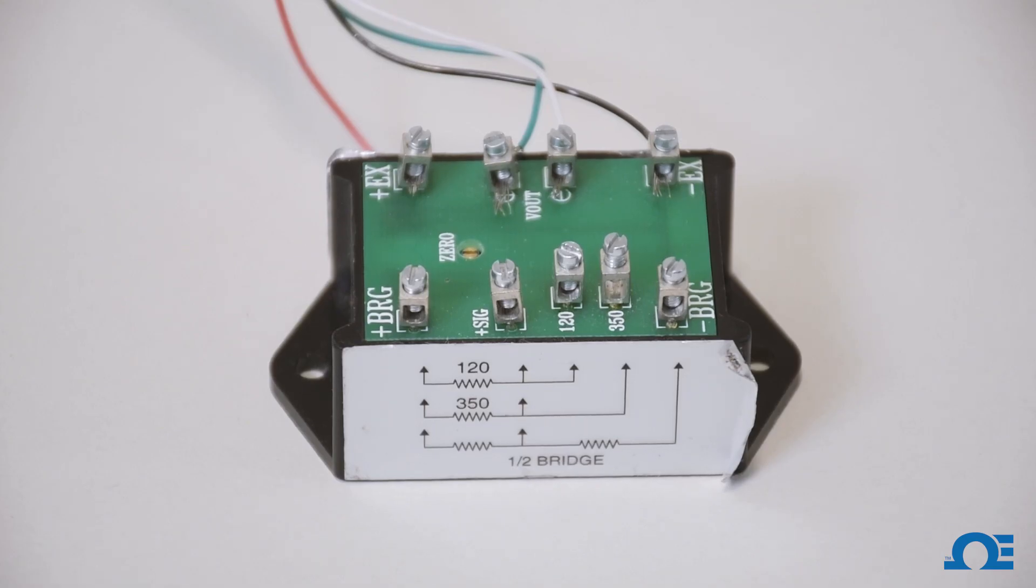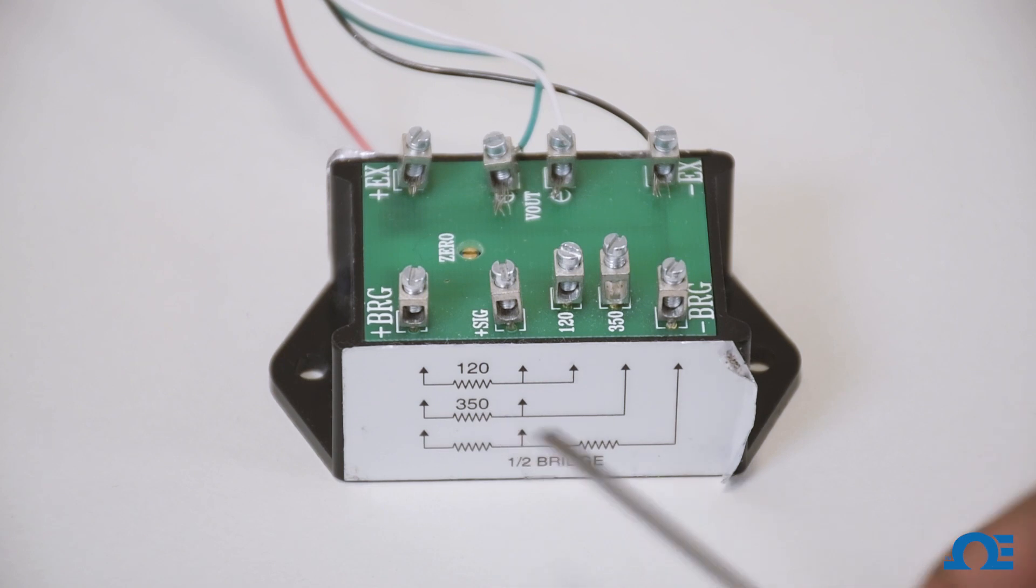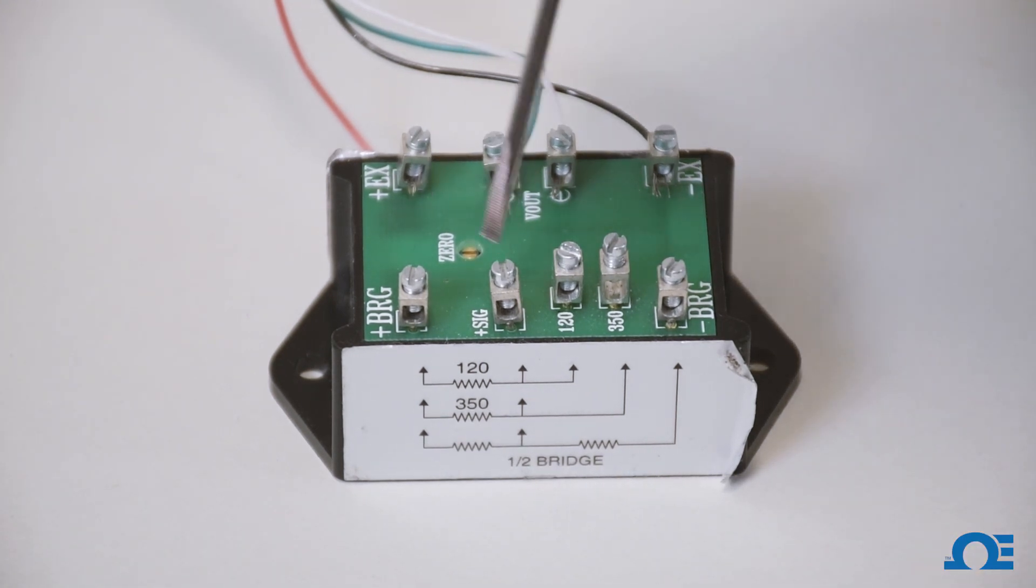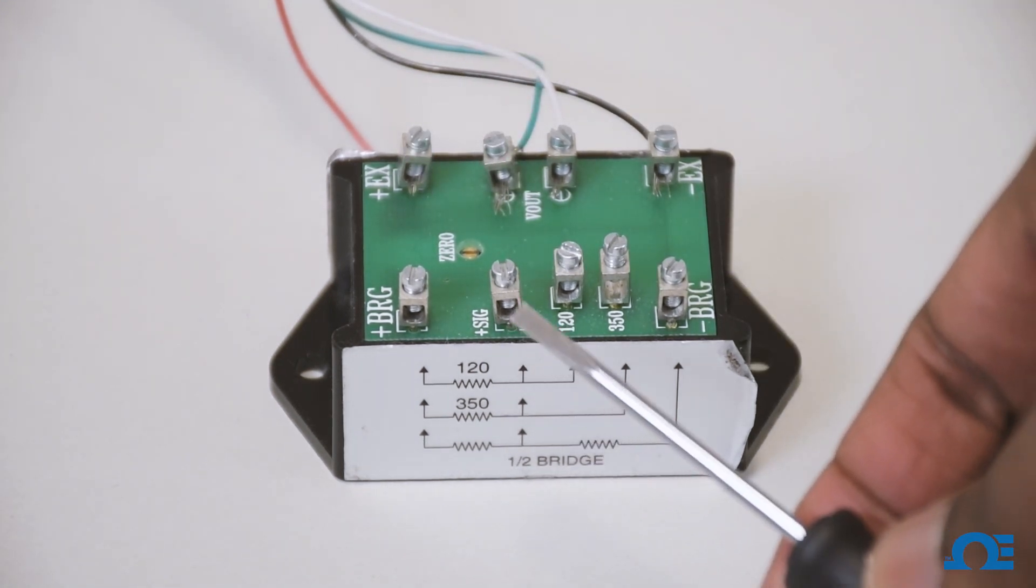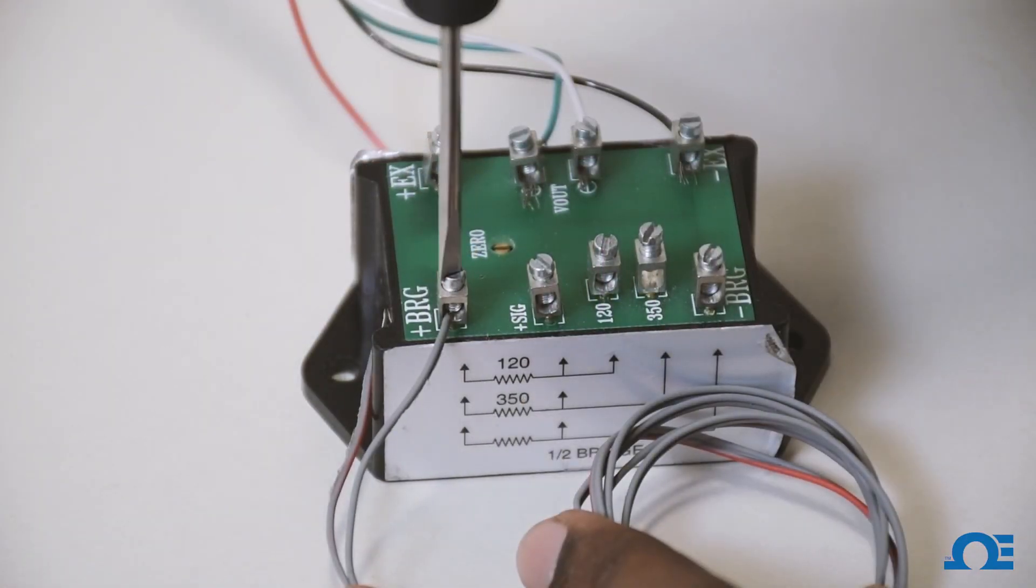If you look at the side of the BCM, you'll see a schematic showing how to connect your strain gauge to the BCM-1 module. There is a 120 ohm strain gauge connected to plus BRG and plus signal, and there is a jumper between plus signal and 120. Let's go ahead and wire it.